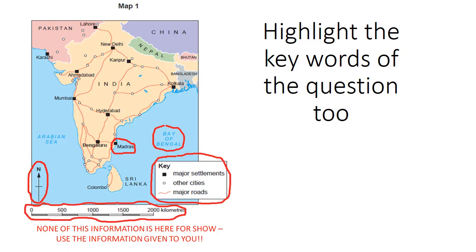Welcome to this exam skills video. We're going to focus on the longest and most important question type: the nine markers. You will get a total of six of these throughout the exam — two on Paper 1, two on Paper 2, and two on Paper 3. One of the Paper 3 questions will be dedicated to your fieldwork and one to the pre-release materials.